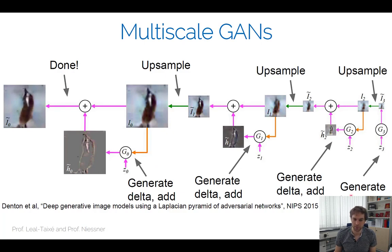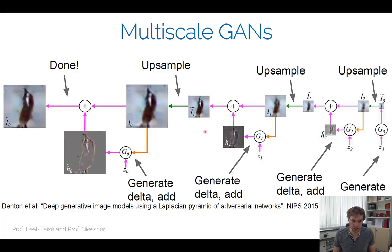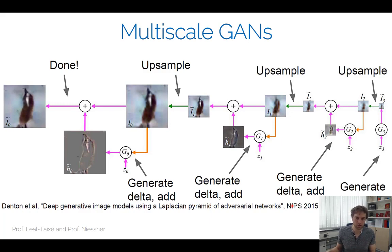The idea is to have multiple scales of generation — generators G3, G2, G1, G0 — where G3 takes the random vector z, establishes global structure at low resolution, and each subsequent generator adds detail after a learnable upsampling step. The core concept is that the coarser levels handle global structure while the finer levels add local detail, progressively building up to a higher-resolution output.